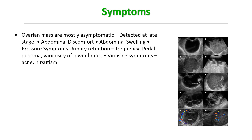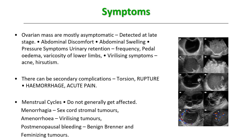Ovarian masses are mostly asymptomatic; they are detected at a late stage, majorly with complaints of abdominal discomfort. A bigger mass can present with pressure symptoms like urinary retention, pedal edema, and even varicosity of lower limbs. Depending upon their origin, they can present with virilizing symptoms like acne, hirsutism, or clitoromegaly. Menstrual cycles are not generally affected unless there are sex cord stromal tumors, virilizing tumors causing amenorrhea, or feminizing granulosa cell tumors causing hyperestrogenic symptoms. Secondary complications like torsion, rupture, and hemorrhage are acute emergencies presenting with acute abdomen or shock.